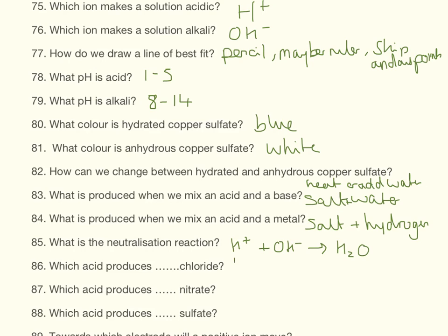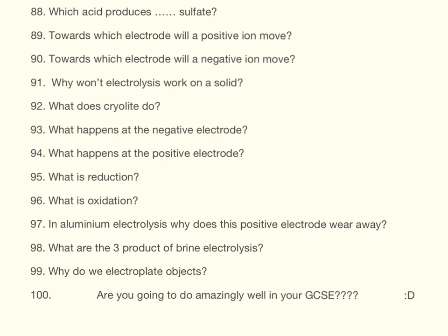Which acid produces chloride? That's hydrochloric acid. Which produces nitrate? That is nitric acid. Which acid produces a sulphate? That is sulfuric acid.